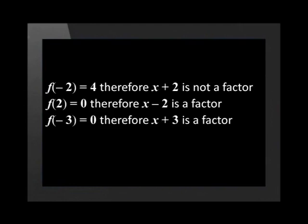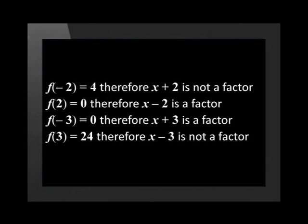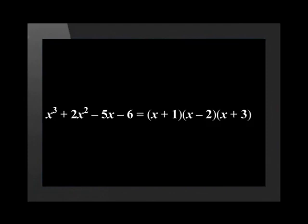f of negative 3 is 0, therefore x plus 3 is a factor. f of 3 is 24, therefore x minus 3 is not a factor of the expression. Therefore, the fully factorized form is: x cubed plus 2x squared minus 5x minus 6 equals x plus 1, multiplied by x minus 2, multiplied by x plus 3.